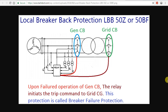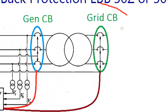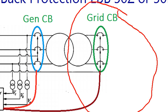If there is a generator breaker failure or a trip command, then if there is a grid breaker trip, the system will return feedback. After some time, it will trip the grid breaker, reaching a tripping mechanism.